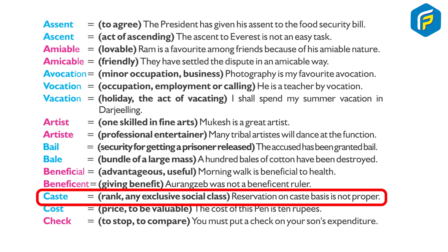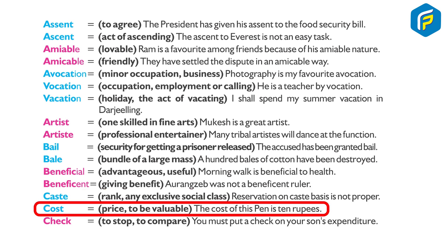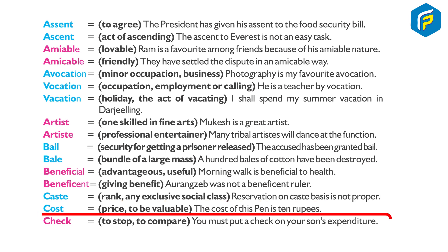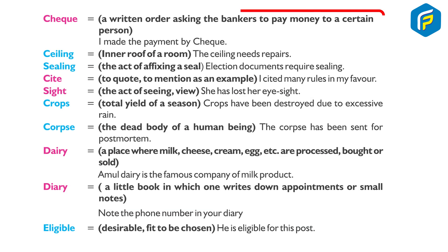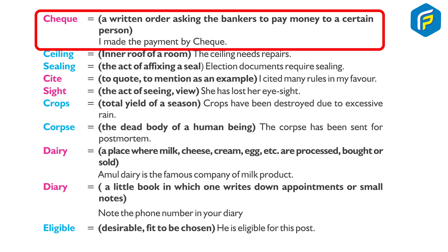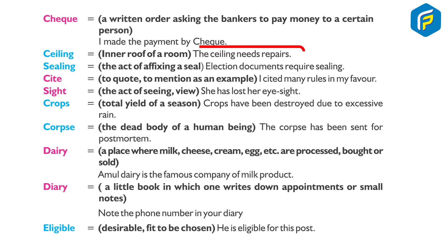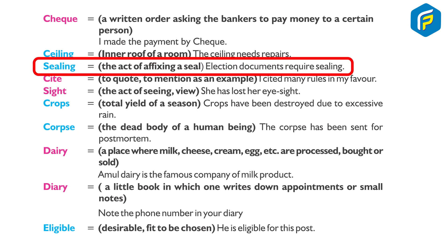Beneficent: giving benefit — 'Aurangzeb was not a beneficent ruler.' Caste: rank in an exclusive social class — 'Reservation on caste basis is not proper.' Cost: price — 'The cost of this pen is 10 rupees.' Cheque: a written order asking the bank to pay money to a certain person. Check: to stop or to compare — 'You must put a check on your son's expenditure.'